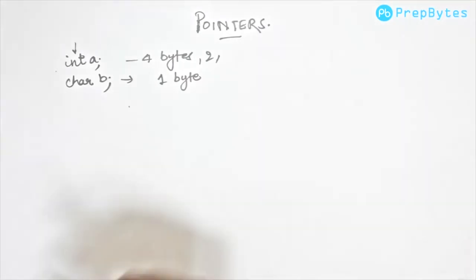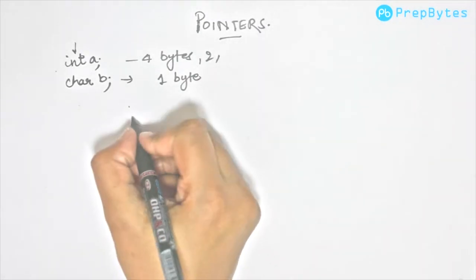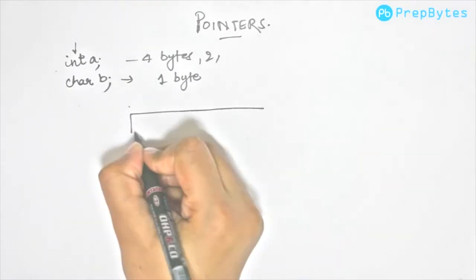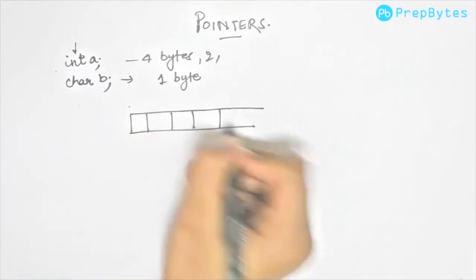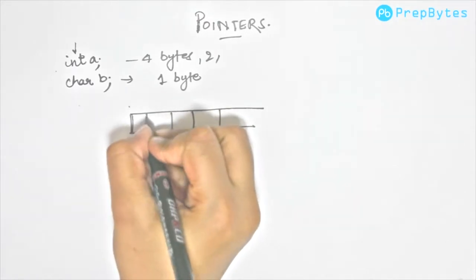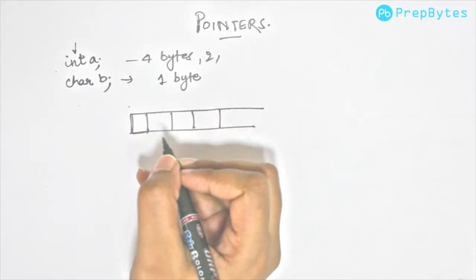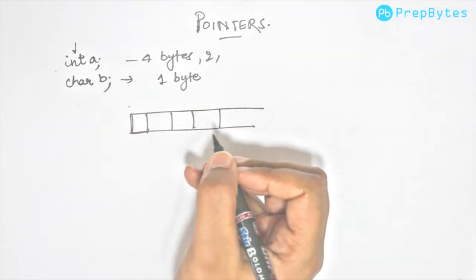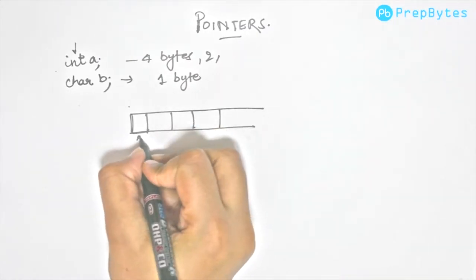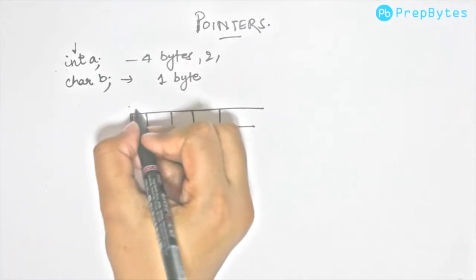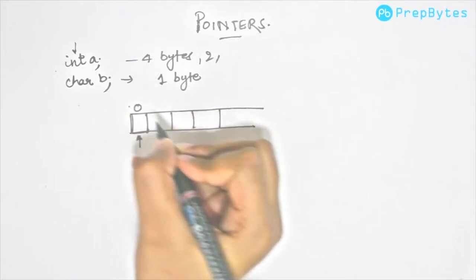First, let's try to understand how addresses are present in memory. You can imagine memory as a box. Each byte that we have in memory has a particular address.